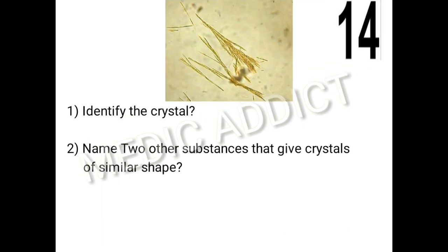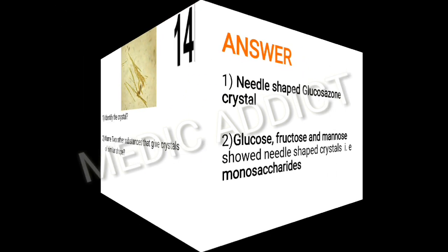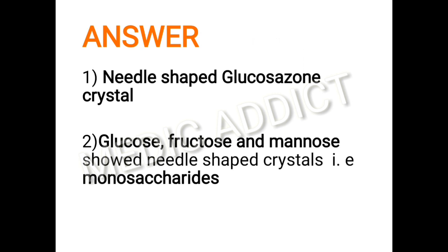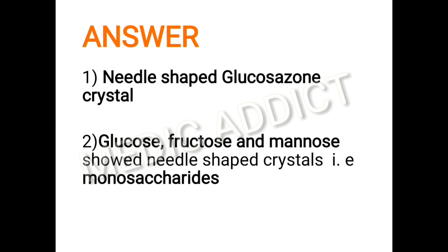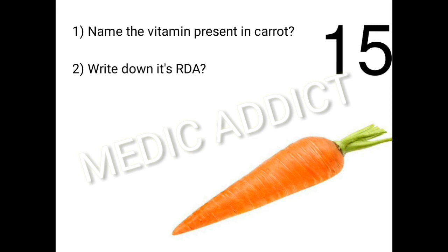The next spot asks us to identify the crystal and name two other substances that give crystals of similar shape. This is a practical biochemistry question from your first-year practicals involving experiments with different sugars. The crystal identified from the figure is needle-shaped, so it is a glucosazone crystal. The other sugars that give such a shaped crystal are glucose, fructose, and mannose — basically all the monosaccharides give this kind of shaped crystal.